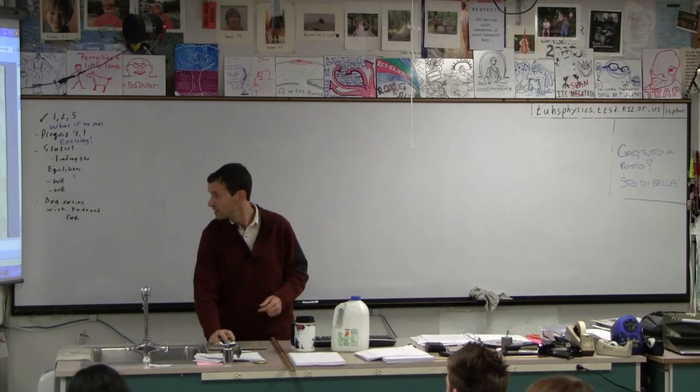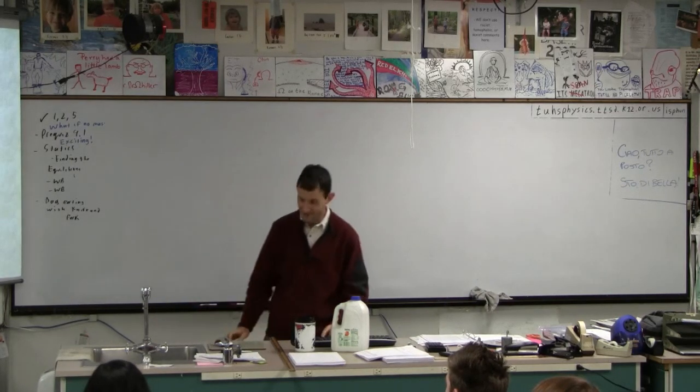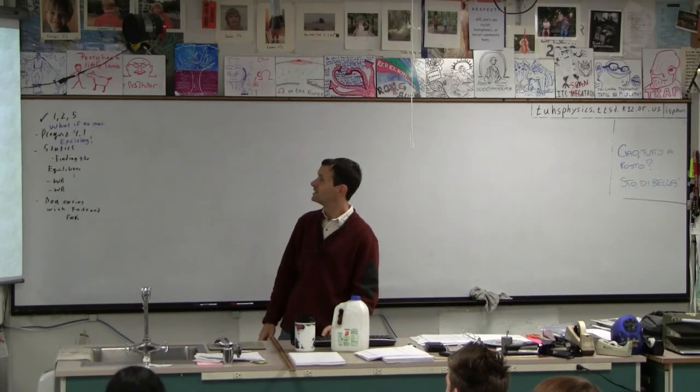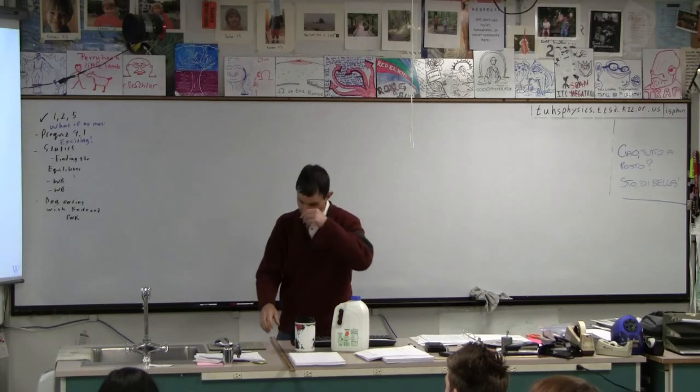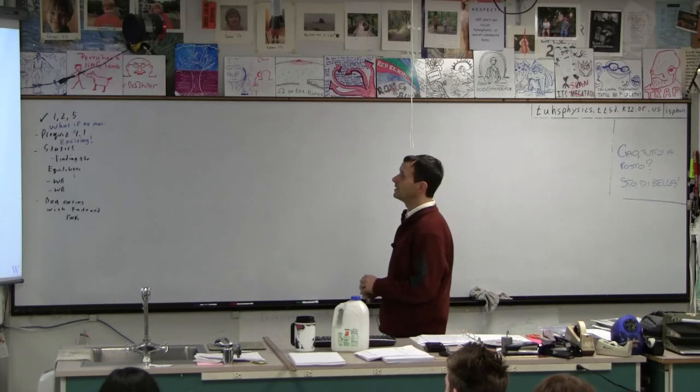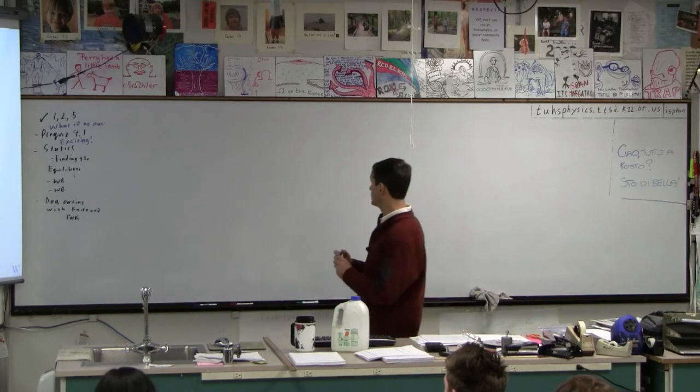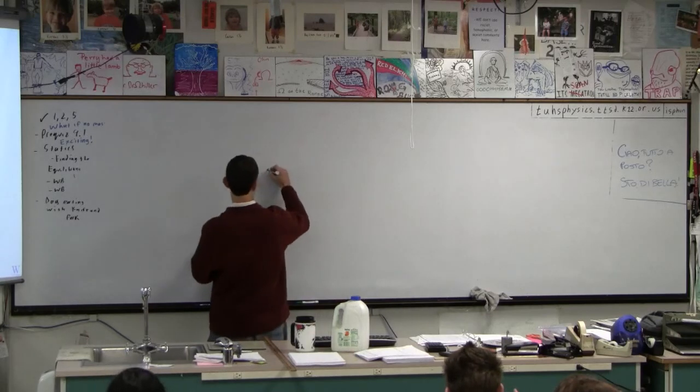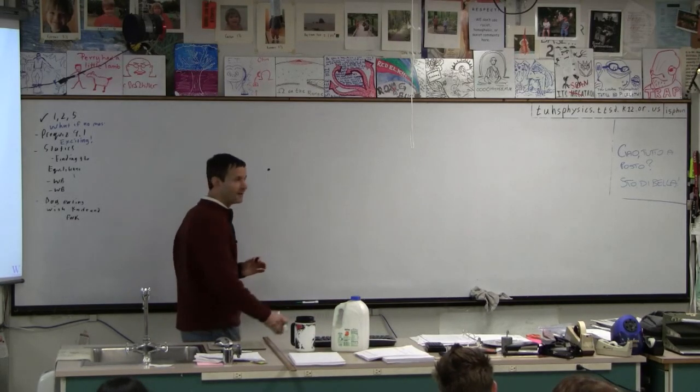So let's look at the example that we have here. All right, step by step, draw the picture, calculate the weights, blah blah blah. Find the force and theta such that the system will be in equilibrium. So we've got some object, this could be like a mass or something like that, right?